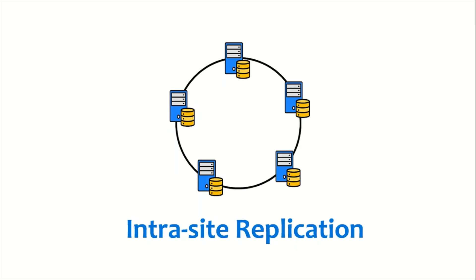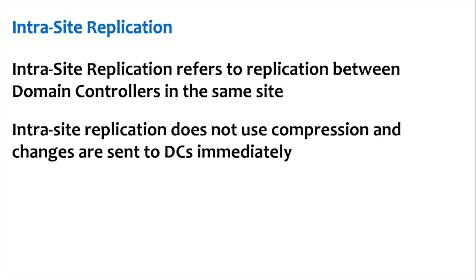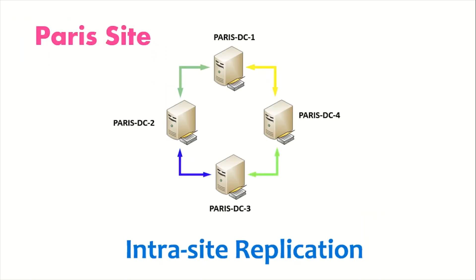Intra-site replication refers to replication between domain controllers in the same site. Unlike inter-site, intra-site replication does not compress the data, and replication happens on an immediate basis. For example, in a Paris site with four domain controllers — DC1, DC2, DC3, and DC4 — any change on DC2 will be immediately replicated to DC1, DC3, and DC4.